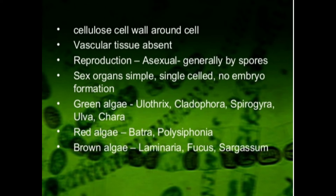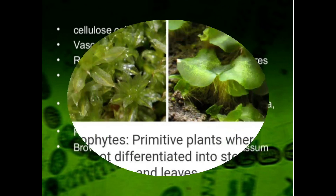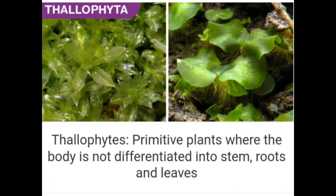Examples of Thallophyta include green algae, red algae, and brown algae. Here you can see a picture of Thallophyta — these are primitive plants where the body is not differentiated into stem, roots, and leaves.